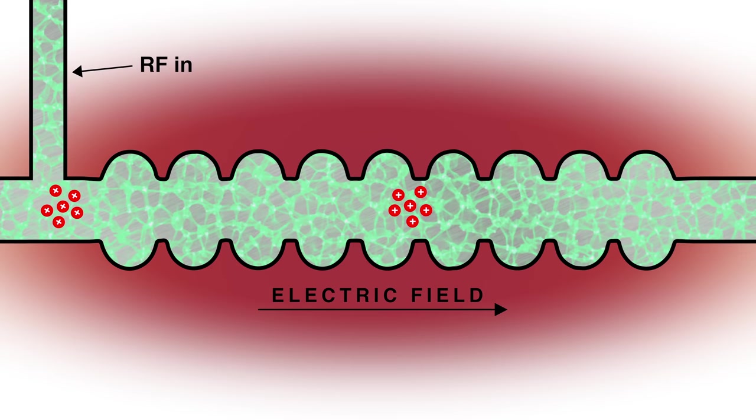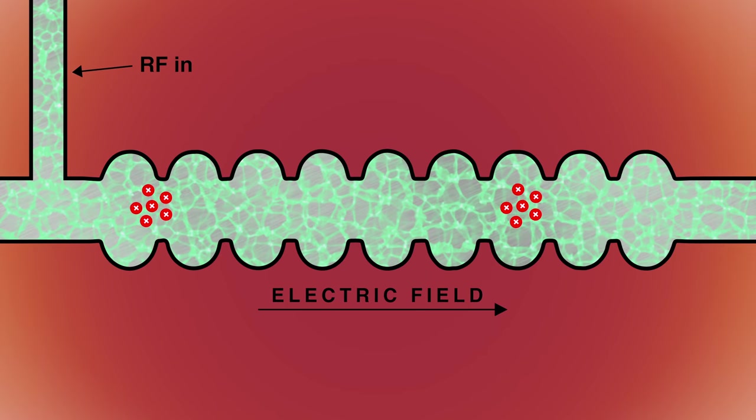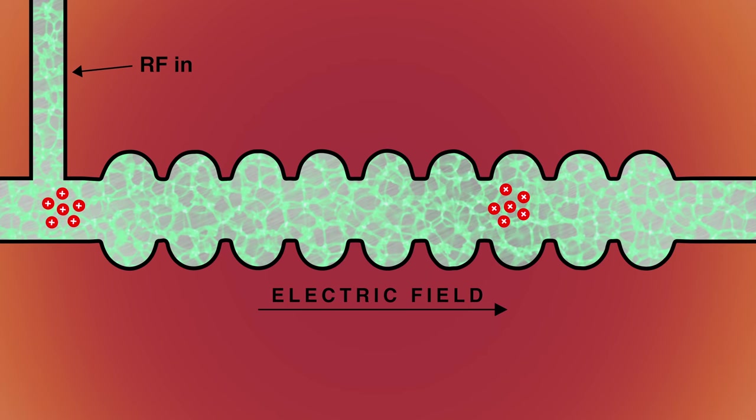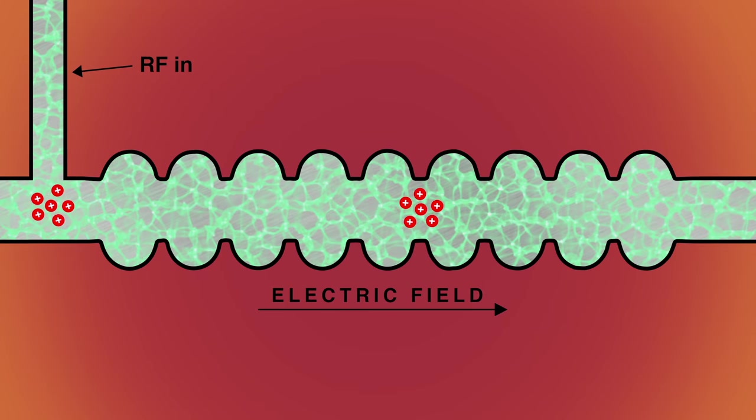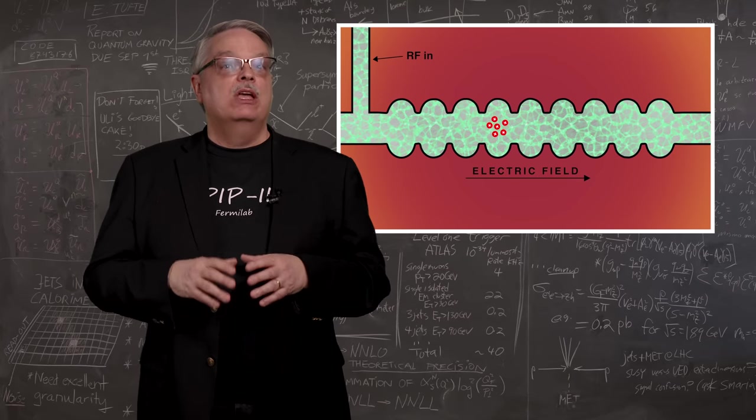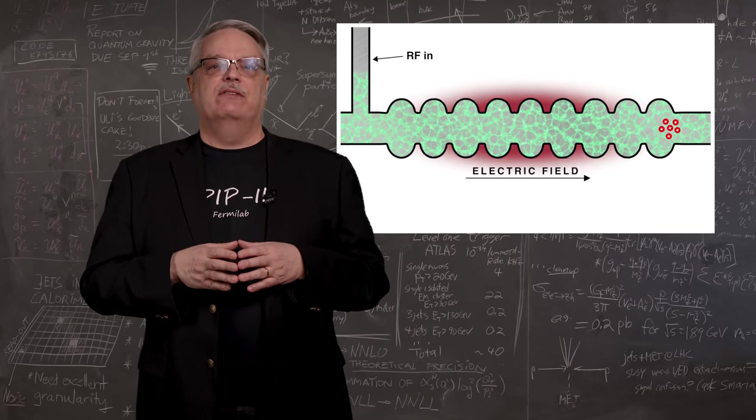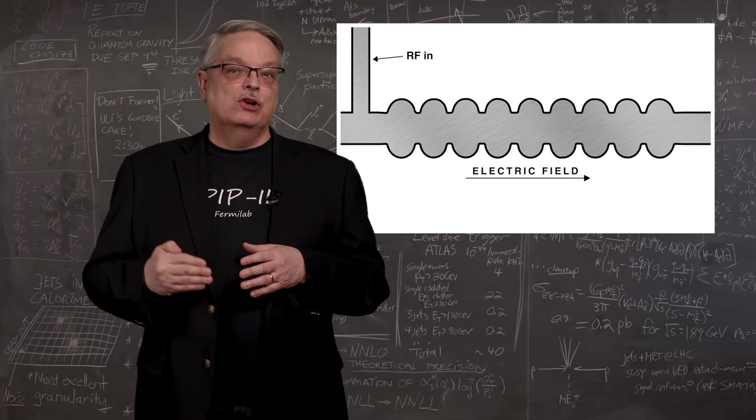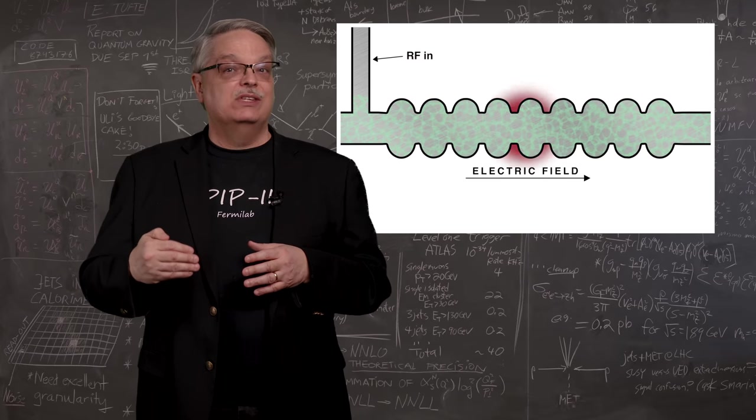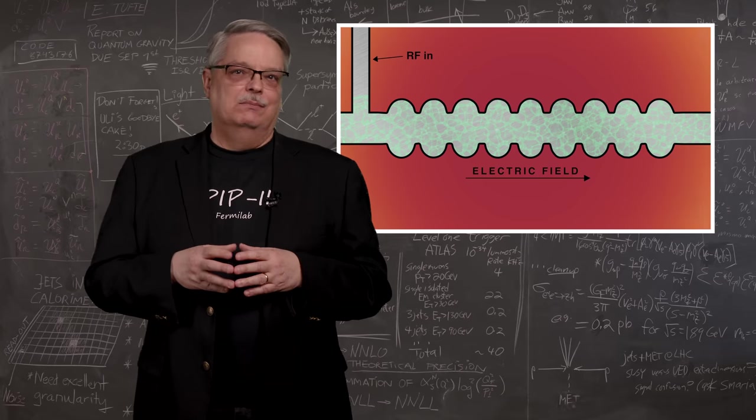And when you think about it, all that energy that is going into heating up the metal doesn't go into accelerating your beam. So first, it's wasted energy that you have to pay for. And second, it's possible to heat up metal so much that it will simply melt and become useless. So you have to cool the cavities, and you turn on and off the radio waves to give the cavities a little time to cool off. It's really not the best way to do it.